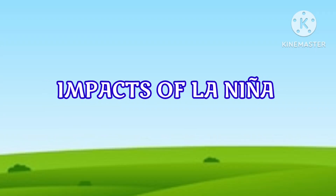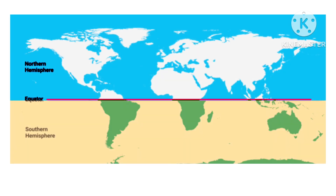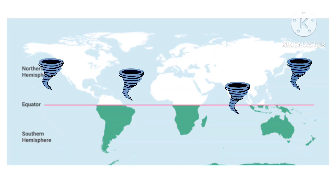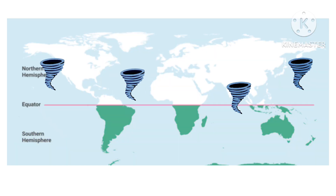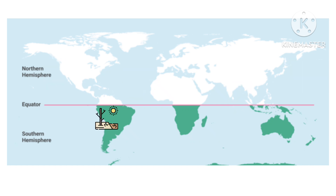Now let's see what are the impacts of La Niña. During a La Niña year, winter temperatures are warmer than normal in the south and cooler than normal in the north. La Niña can also lead to a more severe hurricane season. La Niña causes drought in the South American countries of Peru and Ecuador.